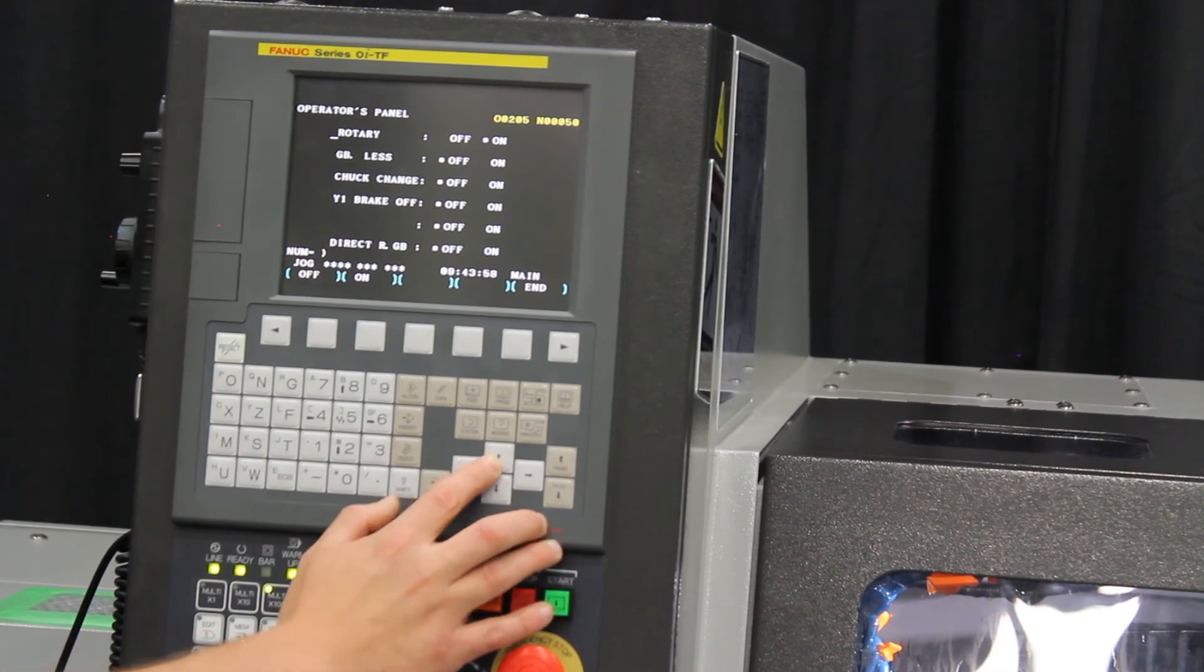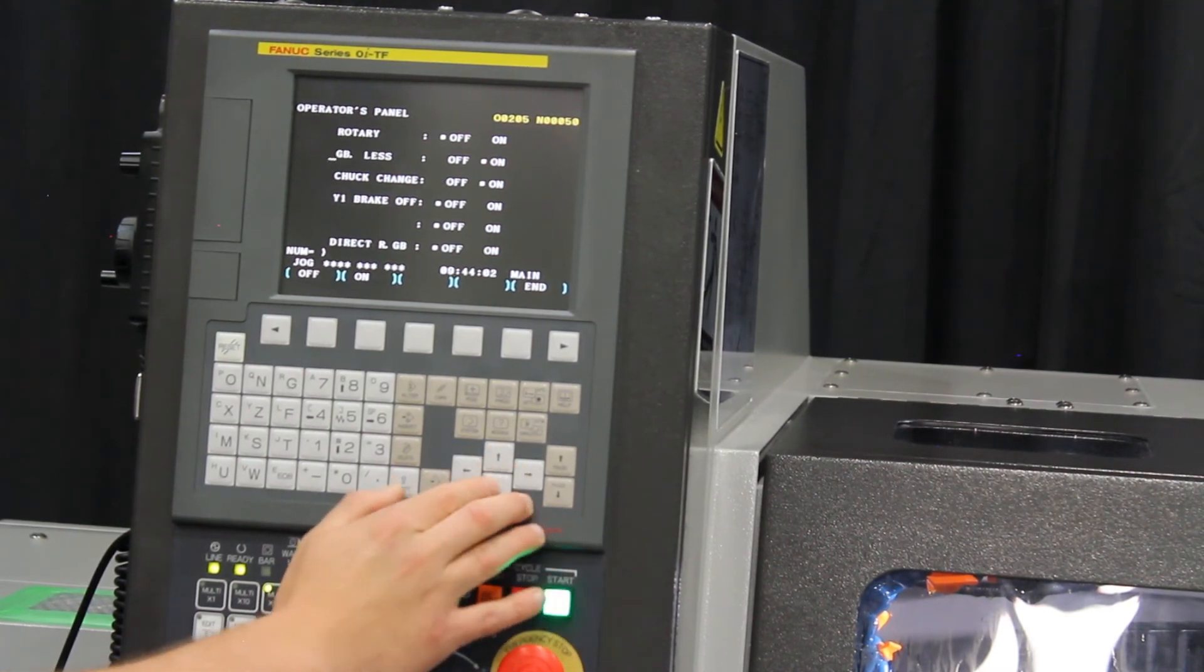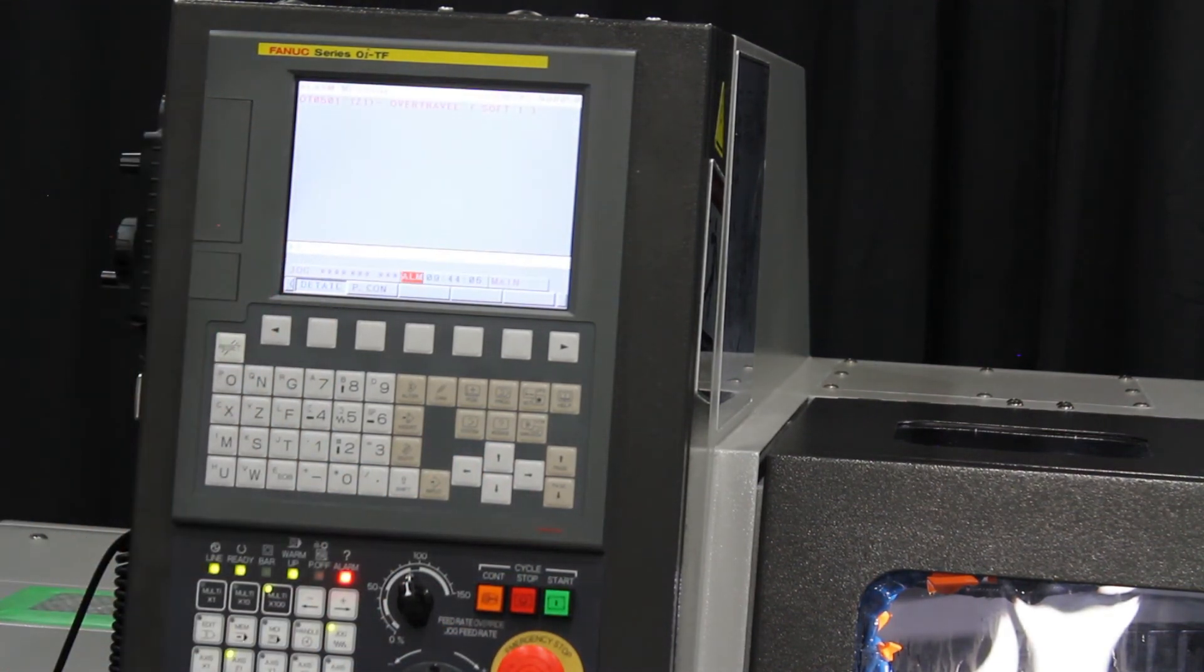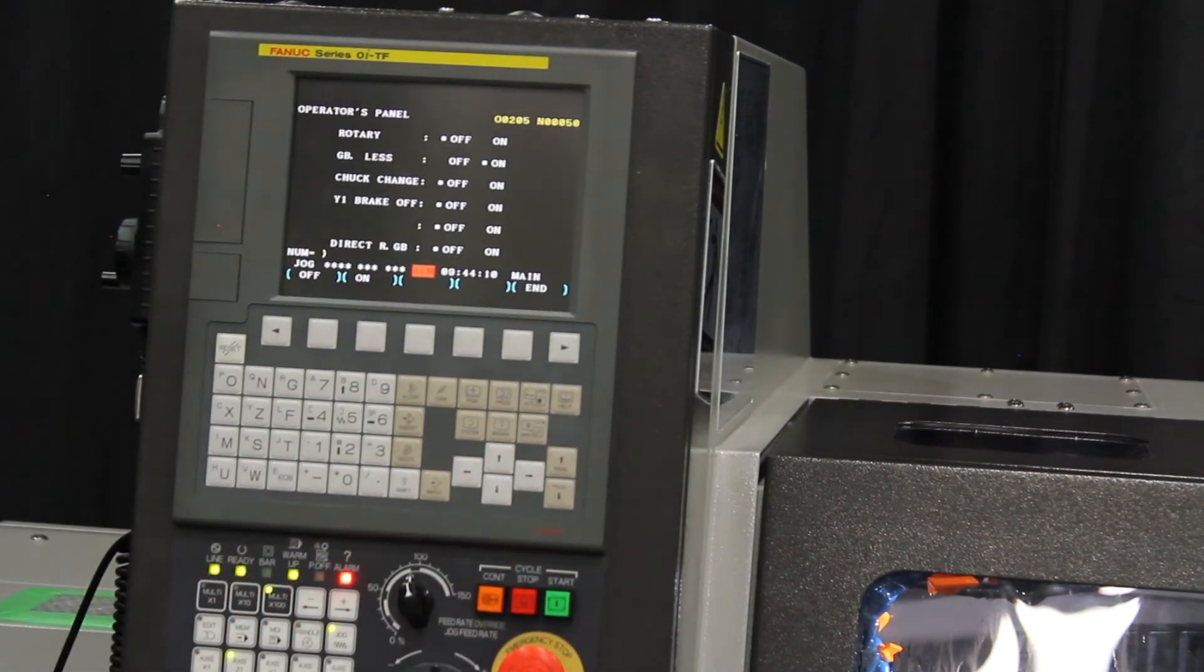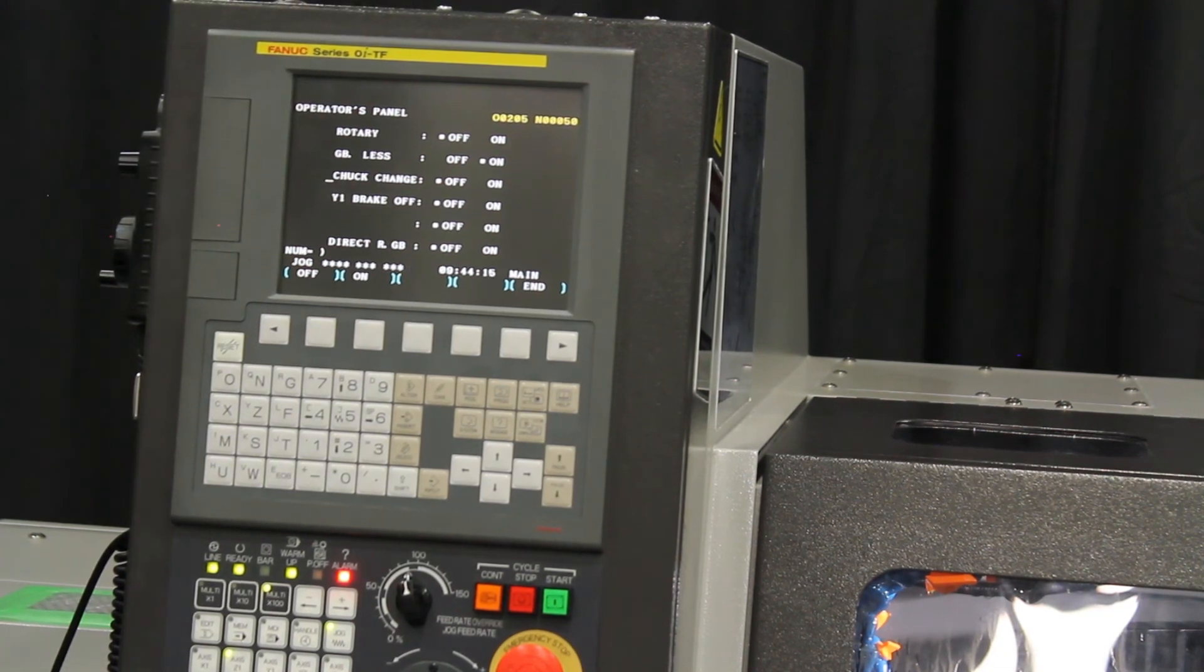If you are going from guide bushing less you will see that it would look something like this. You are going to get an over travel alarm for the fact that I have changed the parameters of how much stroke I have given it and I am in guide bushing less a.k.a. chuck.